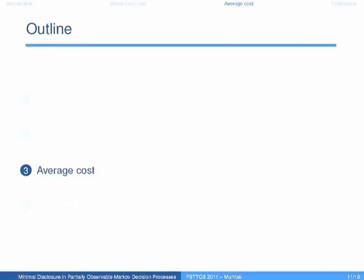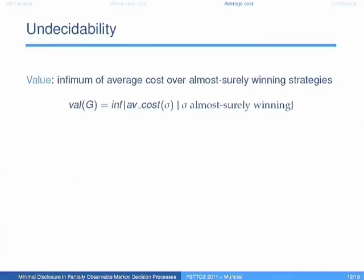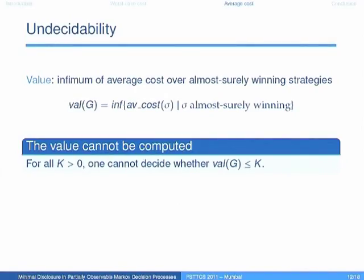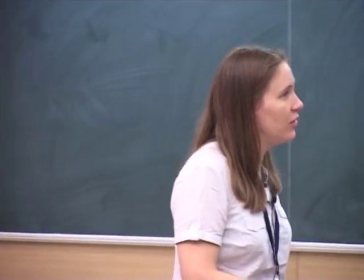On some particular examples, optimizing the worst case coincides with optimizing the average cost, but this is far from the general case. For average cost, I use game terminology and speak of the value of a POMDP as the infimum of average cost over all almost surely winning strategies. The first bad news is that the value cannot be computed: whatever constant you take, you cannot tell whether the value is smaller than that constant. This is not entirely surprising since optimizing cost functions for partially observable MDPs is already undecidable, but we have a special case of POMDP so we could have hoped it would be decidable.